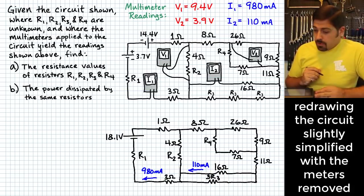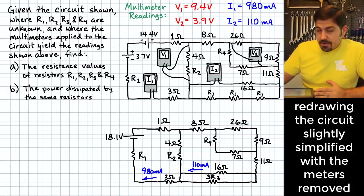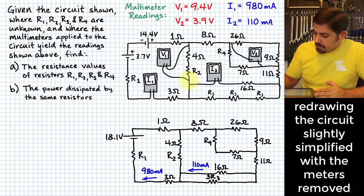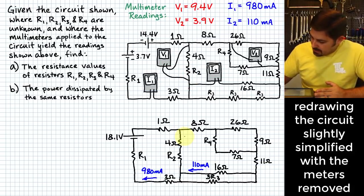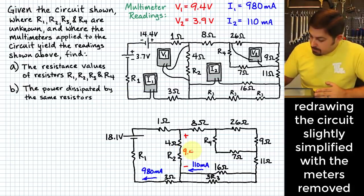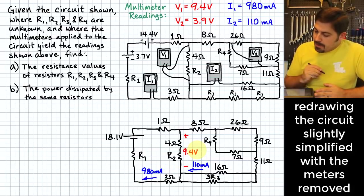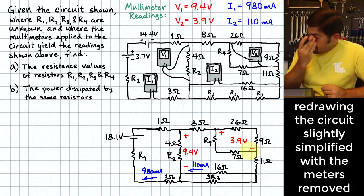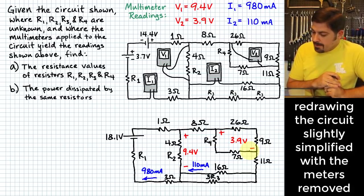Now I'll add what we get from the voltmeters. A voltmeter doesn't allow any current to flow through it — infinite resistance — so no current flows through these multimeters. Instead they give us a snapshot of the voltage across a particular leg. I'll label V1: between those two points I know that's 9.4 volts based on the multimeter reading. Additionally, between the other two nodes I have 3.9 volts measured directly.